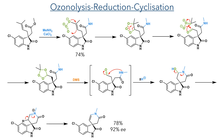This was then subjected to an ozonolysis-reduction-cyclisation sequence. Ozone first undergoes a cycloaddition with the alkene, generating a primary ozonide that decomposes to give a carbonyl oxide and an aldehyde. This recombines through another cycloaddition to give a secondary ozonide that is then reduced by dimethyl sulfide to generate an aldehyde. This aldehyde is not isolated and instead undergoes a spontaneous cyclisation with the primary amide, first forming a hemiaminal that then eliminates to generate an enamine in a 78% yield with 92% ee.